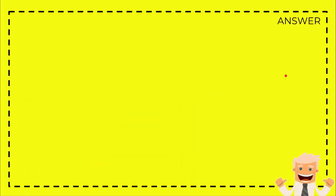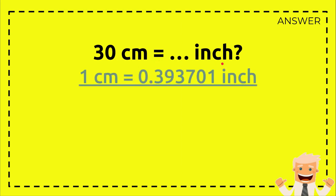Here's the answer section. First, you just need to write down the question again: 30 centimeters equals how many inches? Then you need to write down the equation again, the formula: one centimeter equals this number.